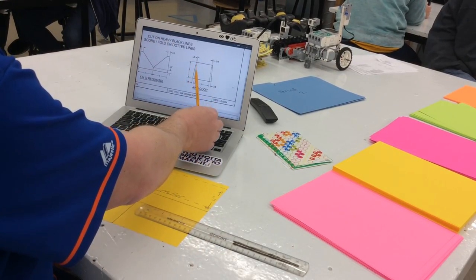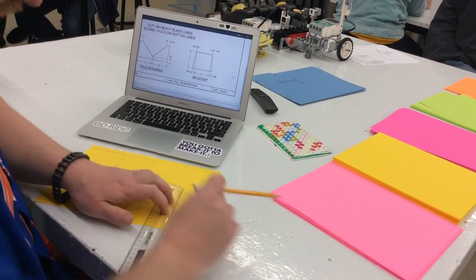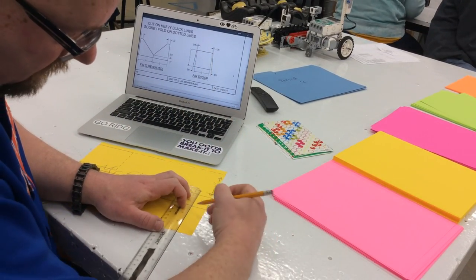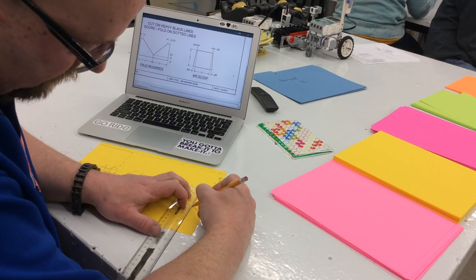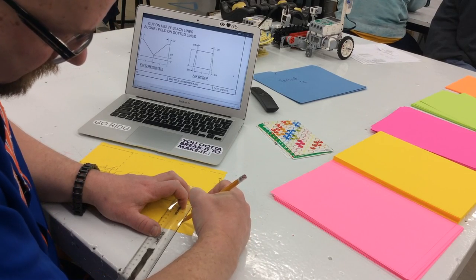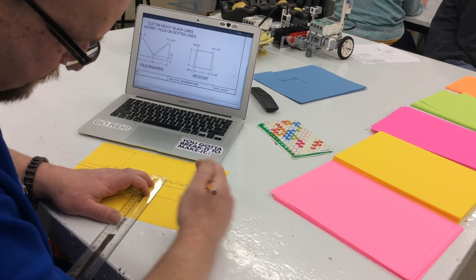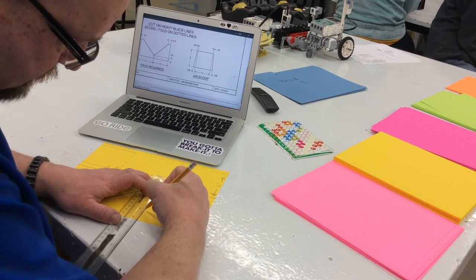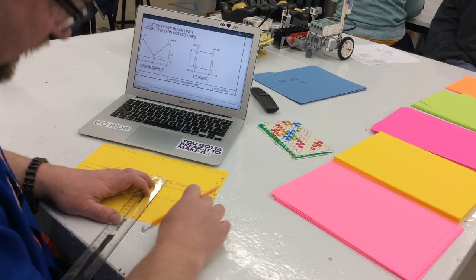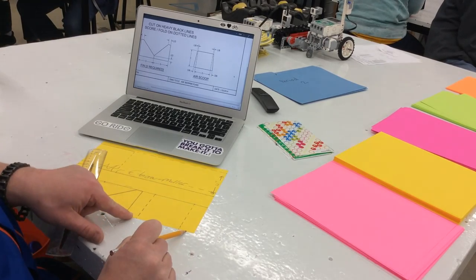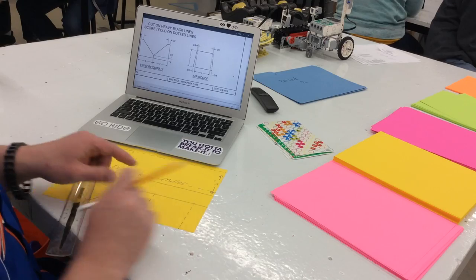So I'm going to make these dashed lines that go straight up and down here first. And now I just need to make the 3 eighths inch out here and the 1 eighths inch out there.